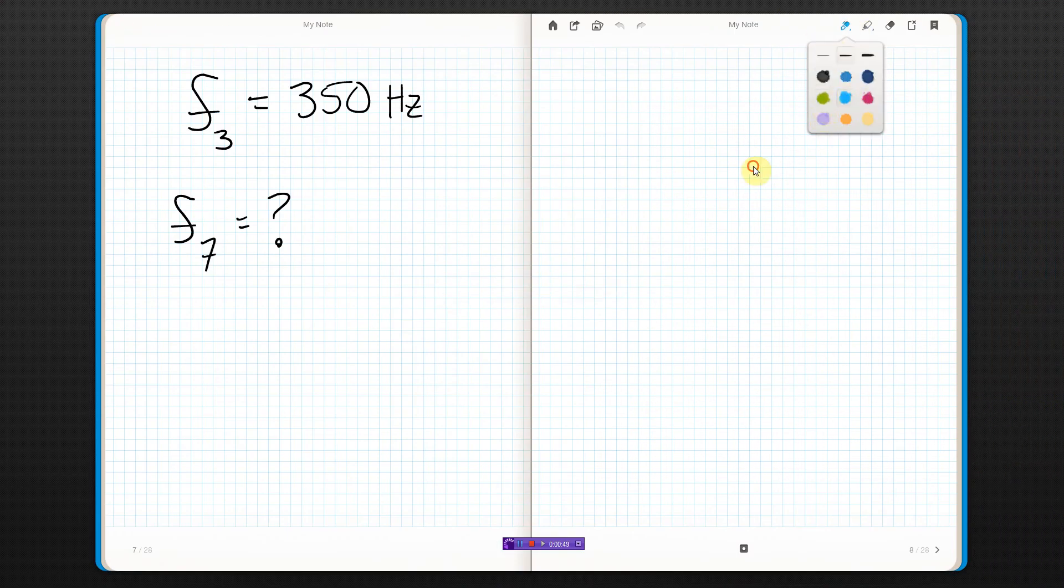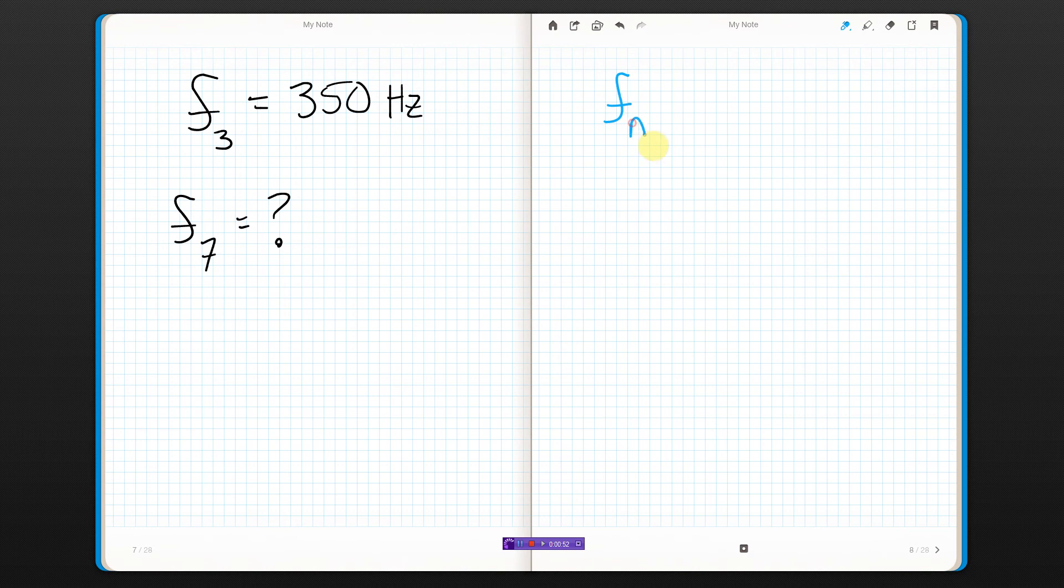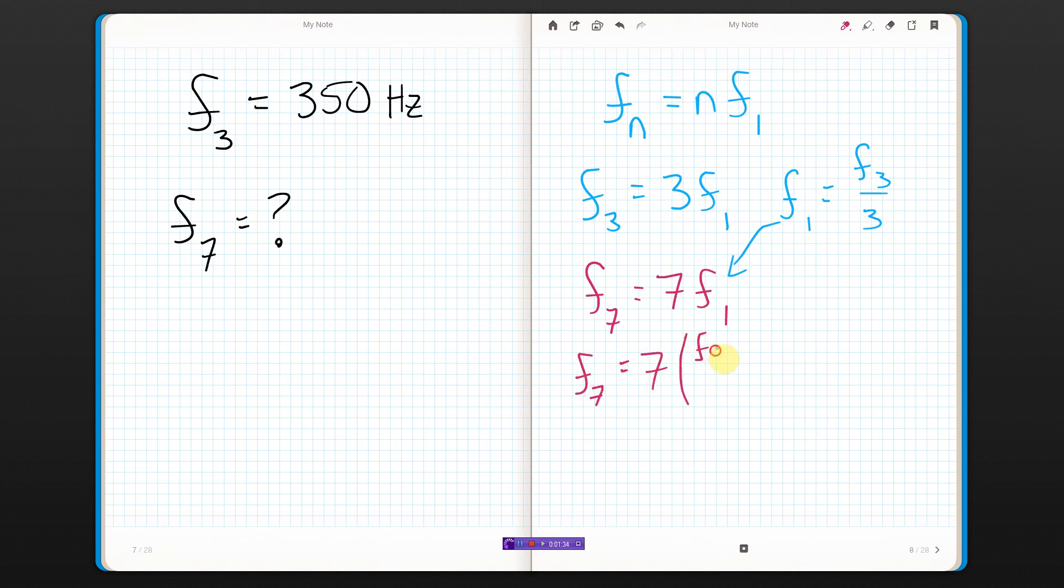Well, I know that in general, for any harmonic, the frequency of any harmonic is that harmonic number times the first harmonic. So what I could say is that f3 equals 3 times f1. Now I don't know what f1 is, but it doesn't matter, because it turns out that's going to go away anyways. I can also say that f7 is 7 times f1. If I solve this for f1, f1 must be f3 over 3. I'm just going to put that in there. So now I have f7 is 7 times f3 over 3.